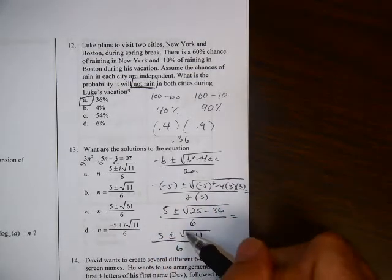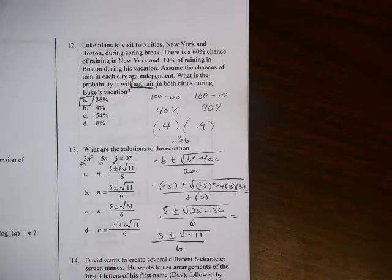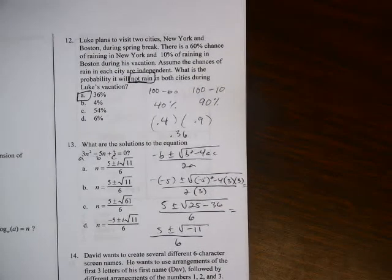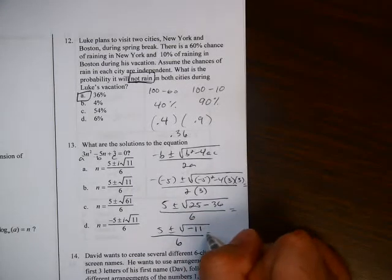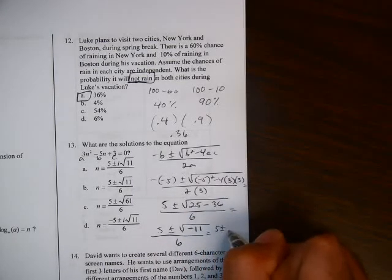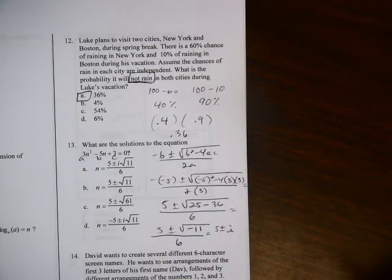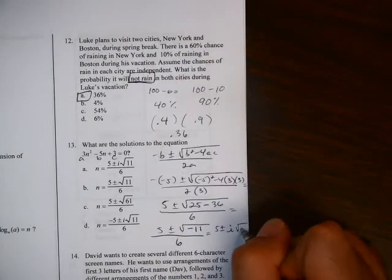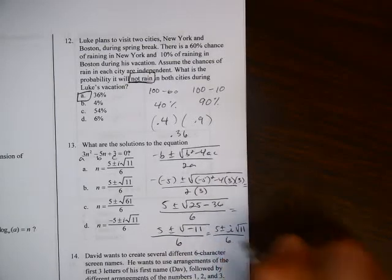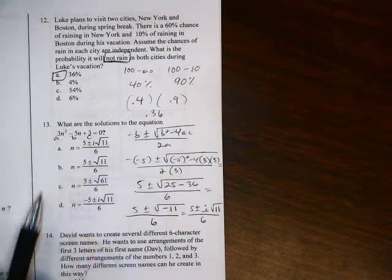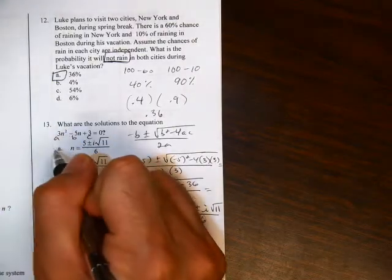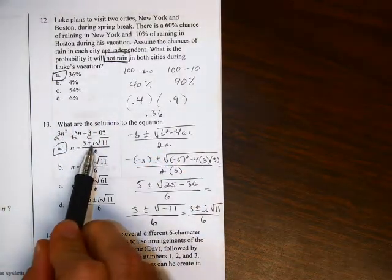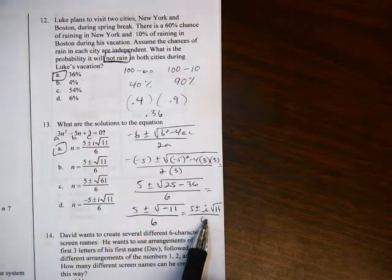And since we have the square root of the negative, remember that was an improper answer. But since we knew about imaginary numbers, we can then change this to 5 plus or minus i for the imaginary number. That takes the negative out of the square root, which leaves us with 11 inside the square root. Which means that our correct answer would be up here at the top, a. There's 5 plus or minus i root 11 over 6.